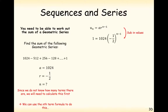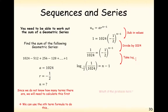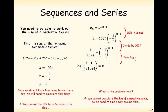So: 1 equals 1,024 times (minus a half) to the power of n minus 1. Now we need to rearrange this. We've got log to the base of minus a half — but we can't do log to the base of a negative number; that's not allowed in the log function. If you tried to compute it you'd get a math error on your calculator. So we need to turn this problem around a little bit.